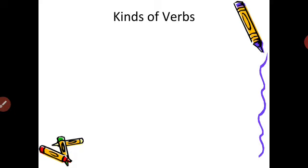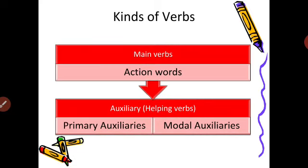Now, kinds of verbs — there are two kinds of verbs: main verbs and helping verbs, which are called auxiliaries. Main verbs are the main action word in a sentence; the direct action going on is denoted by a main verb. Auxiliaries are of two types: primary auxiliaries and modal auxiliaries. Auxiliaries are not the actual action word, but these are helping verbs which help us to know the action going on in the sentence.